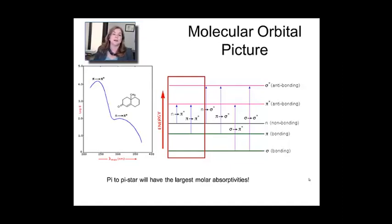Here's a typical spectrum you might see. I want to point out that the pi to pi star transitions are usually going to have the larger molar absorptivities. Absorptivity kind of scales with the electron density in the orbitals and how much that's changing, so pi to pi star will have a higher epsilon or molar absorptivity than, for example, an n to pi star.